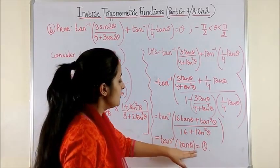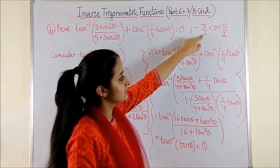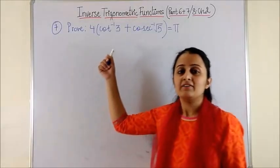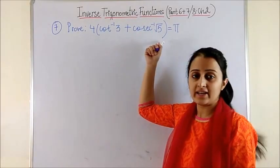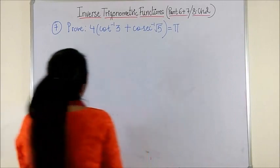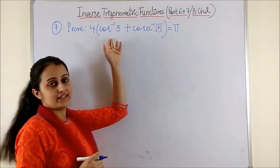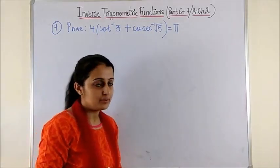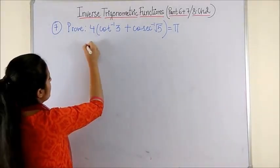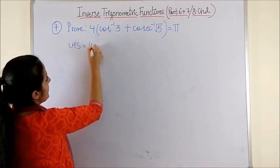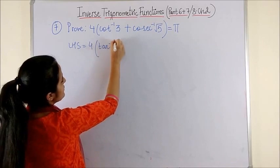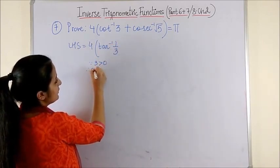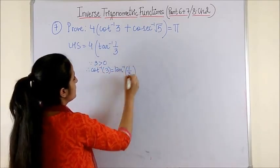We can apply this property under the given condition. Please have a look at the 7th question — another proving question. Your cot⁻¹3, since 3 > 0, could be reduced to tan⁻¹(1/3). So starting with the LHS, I can write cot⁻¹3 as tan⁻¹(1/3) since 3 > 0, and therefore cot⁻¹(3) = tan⁻¹(1/3).